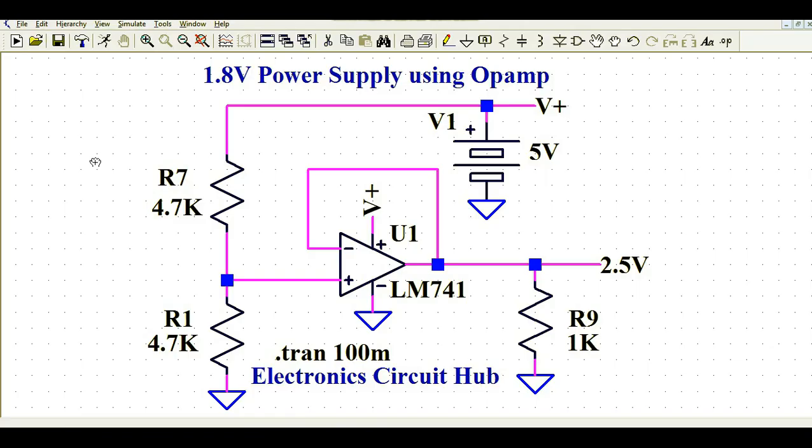Let's first understand how this circuit works and how you're going to design the power supply using an operational amplifier. If you look here, I have used a simple op amp, that is LM741. The positive supply is connected to 5 volt and the negative supply is connected to the reference or ground.